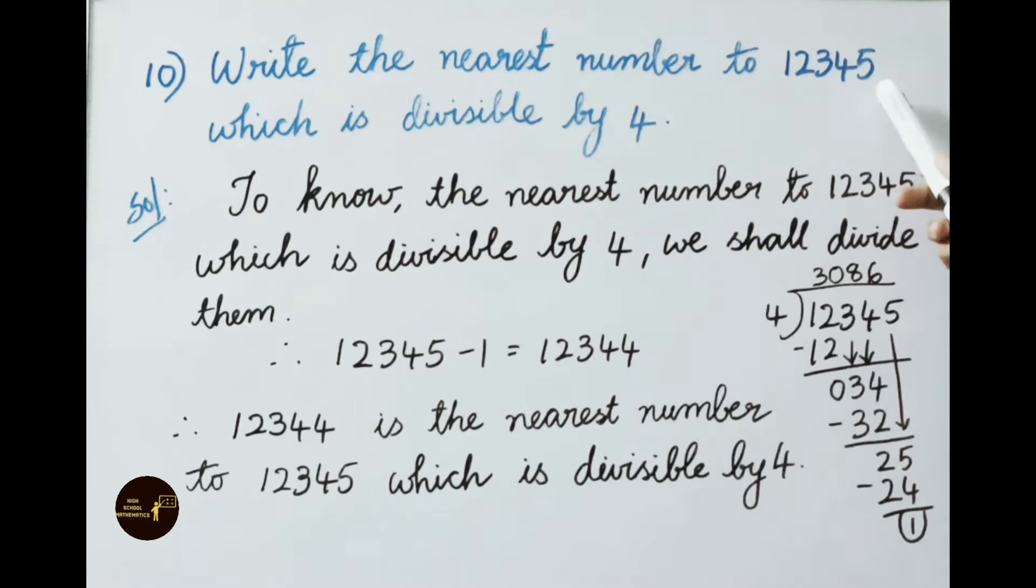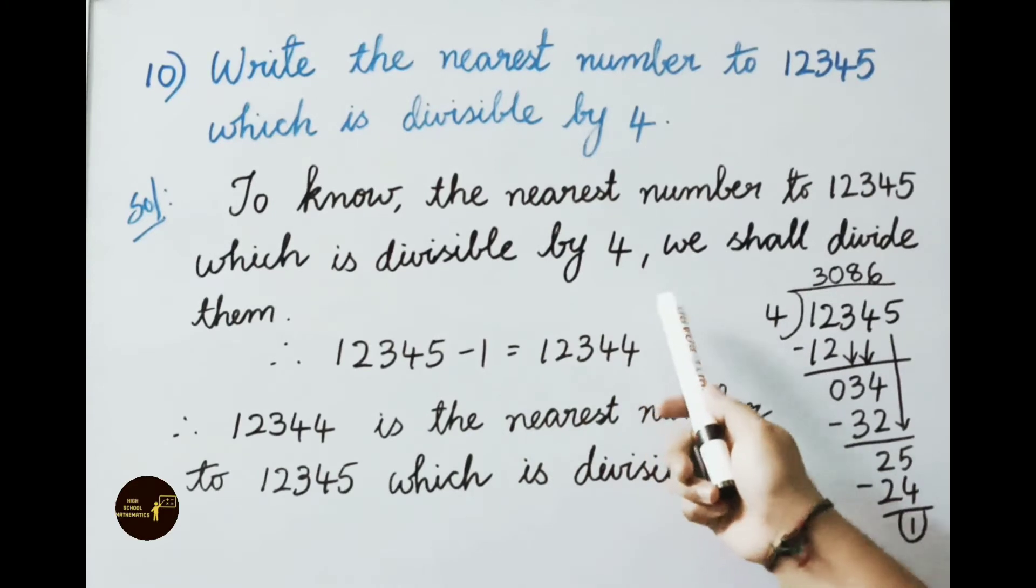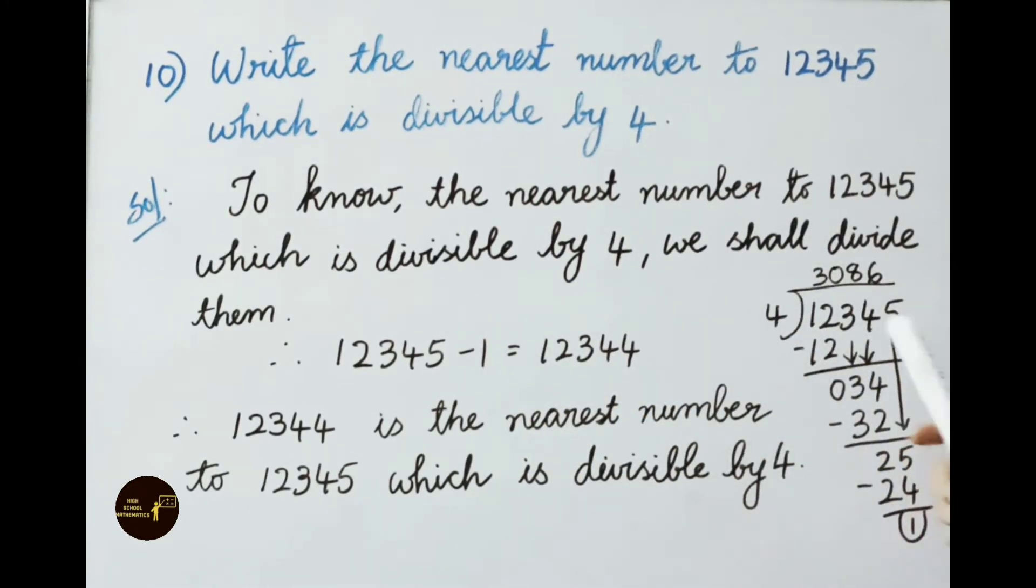See the 10th question. Write the nearest number to 12,345 which is divisible by 4. See the solution. To know the nearest number to 12,345 which is divisible by 4, we shall divide them. 12,345 divided by 4. 4 threes are 12. 12 minus 12 is 0. Write on the next digit 3. 3 is less than 4. We shall take one more digit, that is 4, and place a 0 in the quotient. 4 eights are 32. 34 minus 32 is 2. Write on the next digit 5. 4 table, 4 sixes are 24. 25 minus 24 leaves a remainder 1. Therefore the given number 12,345, if we subtract 1, we get 12,344, which is the nearest number to 12,345 that is divisible by 4.